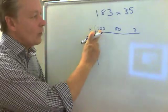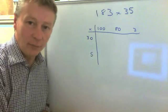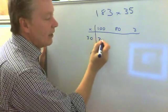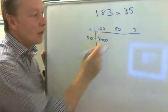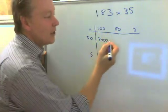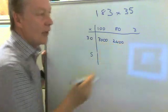So the first one is 100 multiplied by 30, which is 3000. Okay? 30 multiplied by 80, which is 2400.